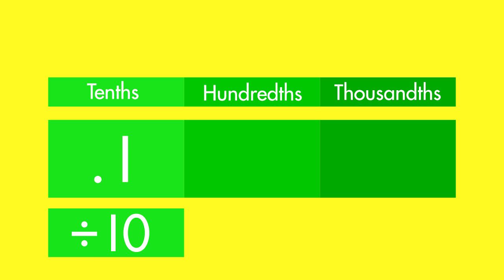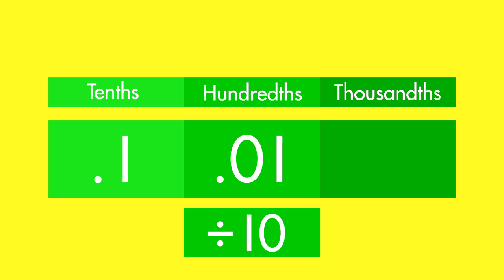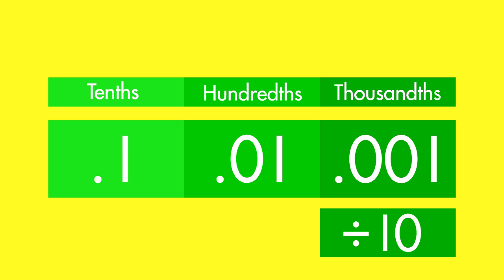As the decimal numbers get smaller, going from left to right, the value of each place is one-tenth the value of the place before. It contains one more zero than the value of the place to the left.